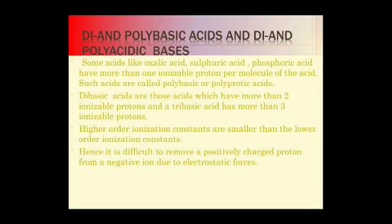Now we look at dibasic and polybasic acids, and dibasic and polyacidic bases. Dibasic and polybasic acids are those which have two or multiple ionizable protons per molecule. Examples include oxalic acid, sulfuric acid (H2SO4), and phosphoric acid (H3PO4). Sulfuric acid has two removable protons, making it dibasic.